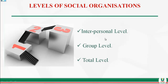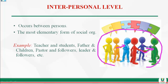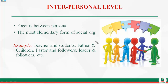The interpersonal level involves one-on-one interaction between individuals. It is the most elementary form of social organization. Examples include the relationship between teachers and students, father and children, and pastor and followers — any sort of one-on-one type of interaction.